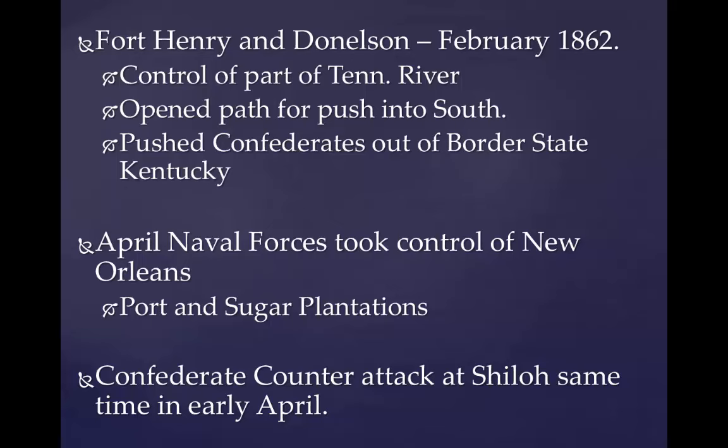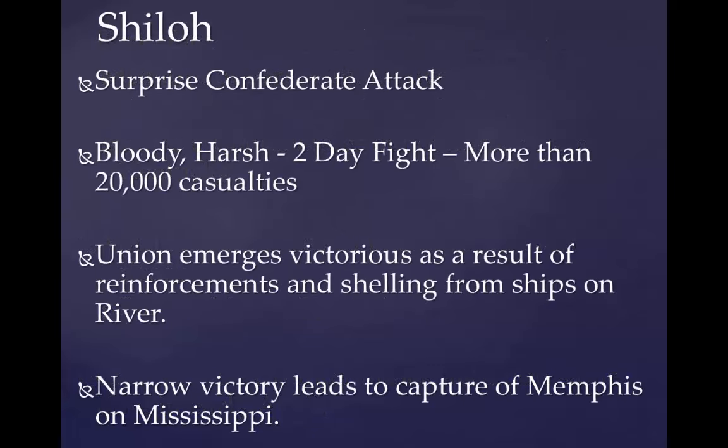The Confederates attempted a counterattack at Shiloh in early April, trying to regain momentum. It was a Confederate surprise attack and another bloody fight — more than 20,000 casualties in a two-day battle, extremely tiresome and daunting for the men. But ultimately the Union emerged victorious due to reinforcements and shelling from Union naval ships along the river. This narrow victory then led to the capture of Memphis, Tennessee, also on the Mississippi River. The North was looking really good in the West.